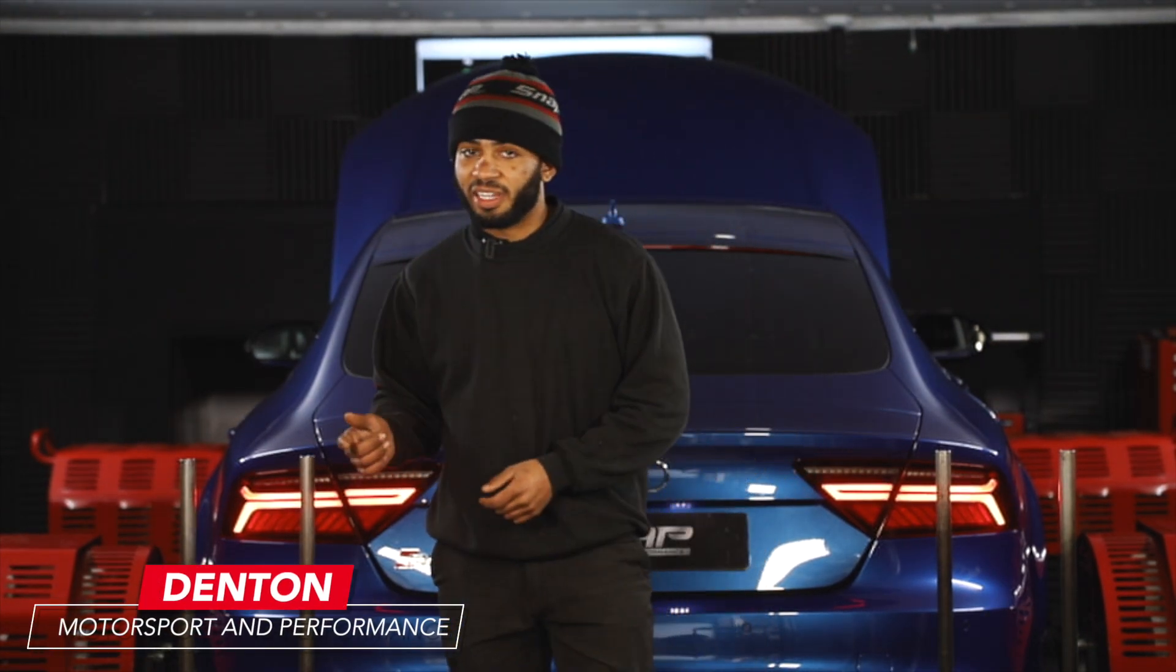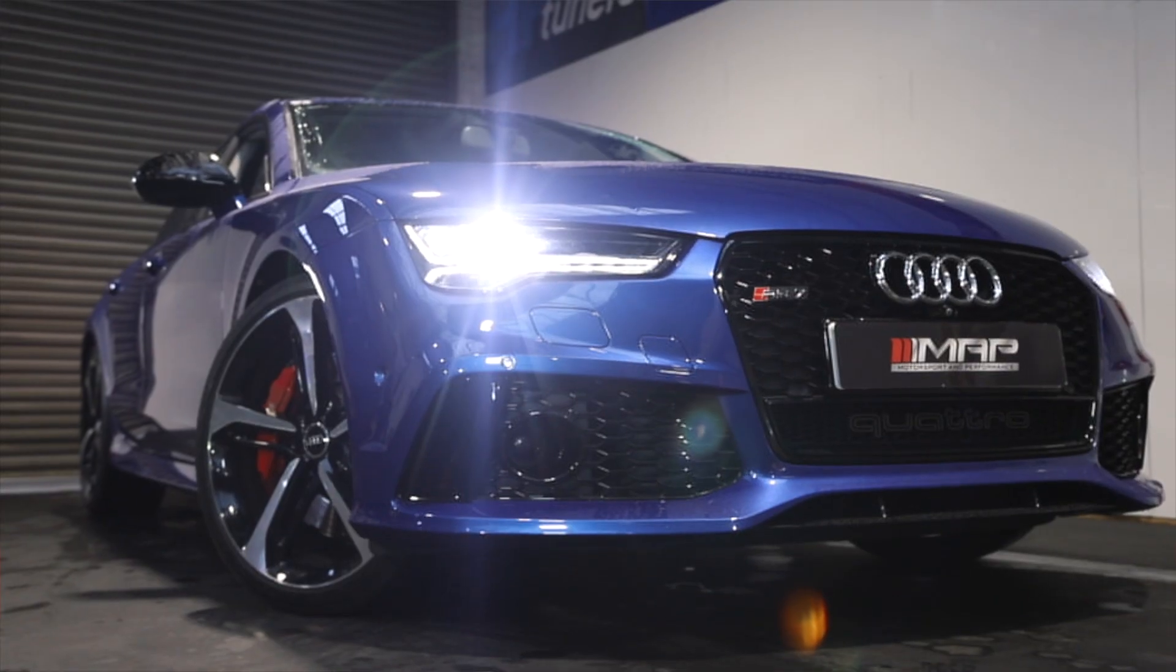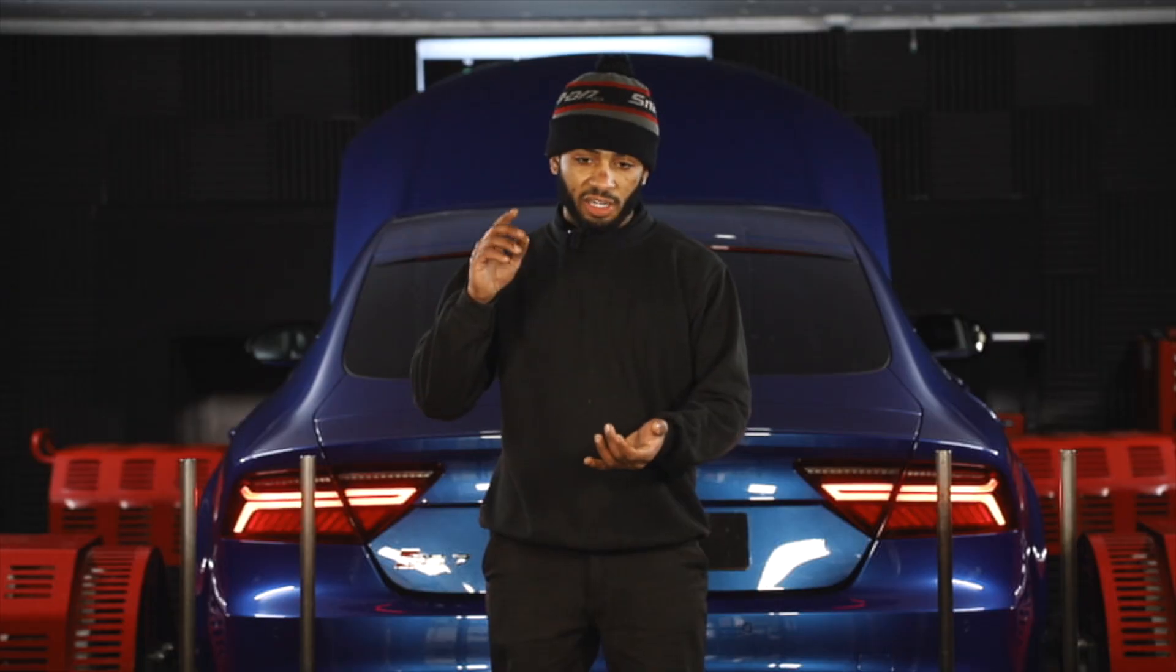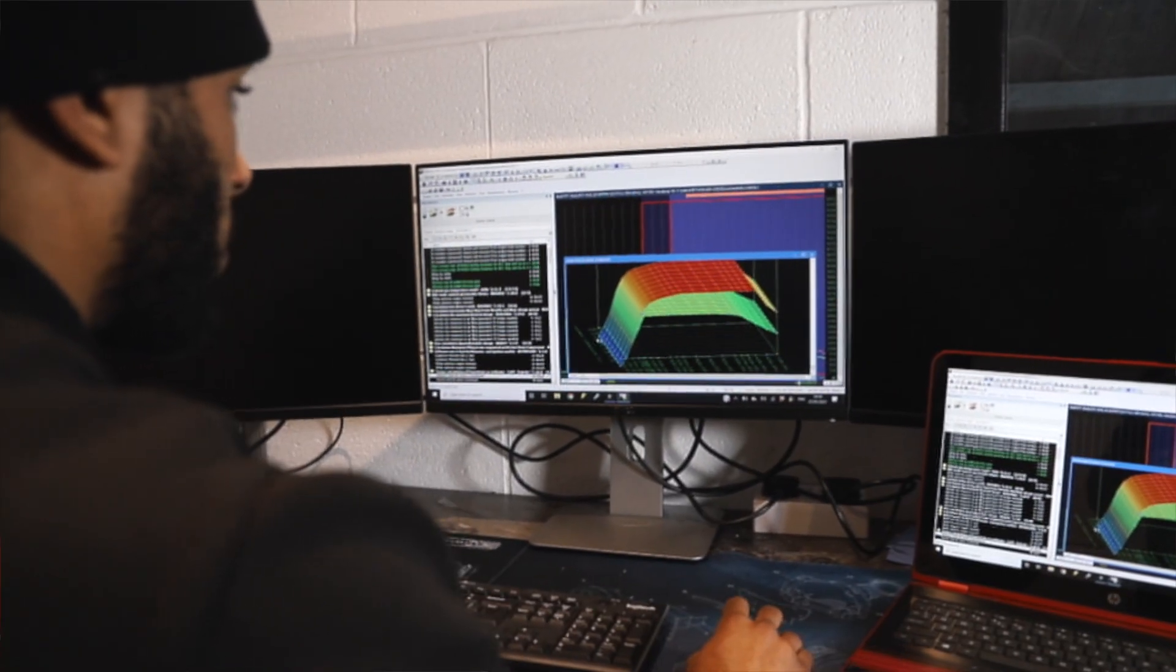Welcome back to another episode of MapTV. Today we've got this 2015 Audi RS7N, we're doing a Stage 1 engine and gearbox tune. We're going to walk you through the whole tuning process so you'll be able to see dyno runs, taking data logs, analyzing that data and actually building the tune to flash back in the car. Let's crack on, let's get to it.